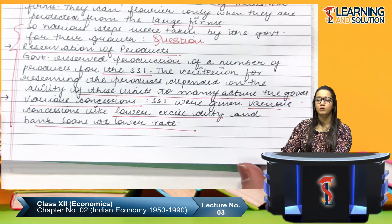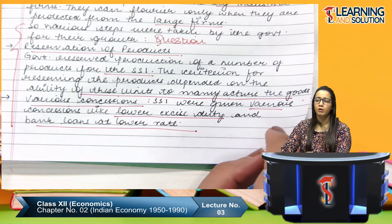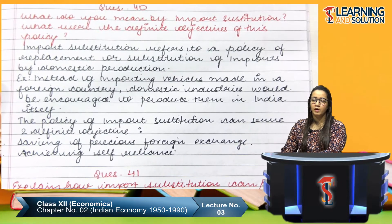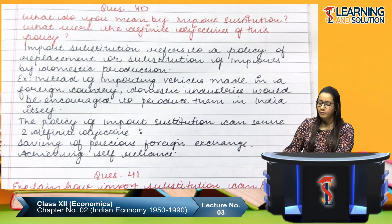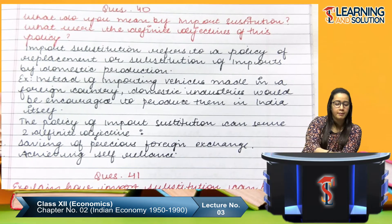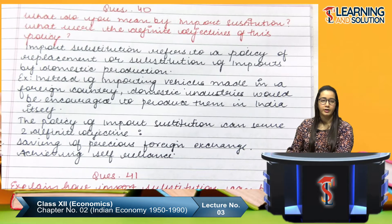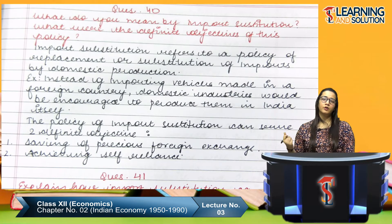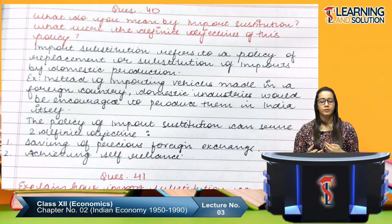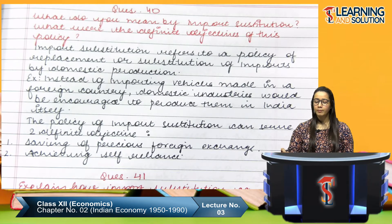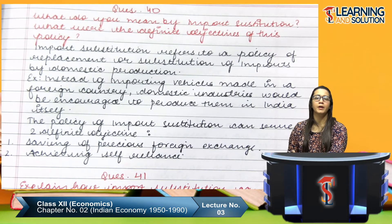So the role of small scale industry was: first, employment generation; second, need for protection from large firms, addressed through reservation of products and various concessions. Now we come to our topic of foreign trade. We completed the industrial sector — which covered the public sector's leadership role, the IPR 1956 classification, and the industrial licensing. Now we move to import substitution.